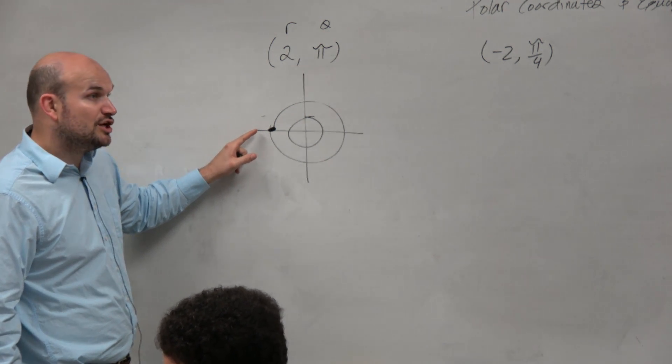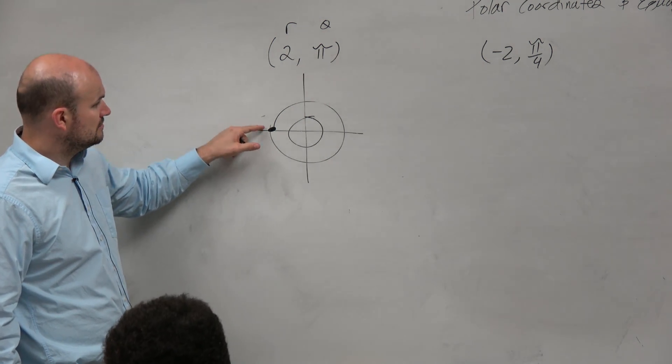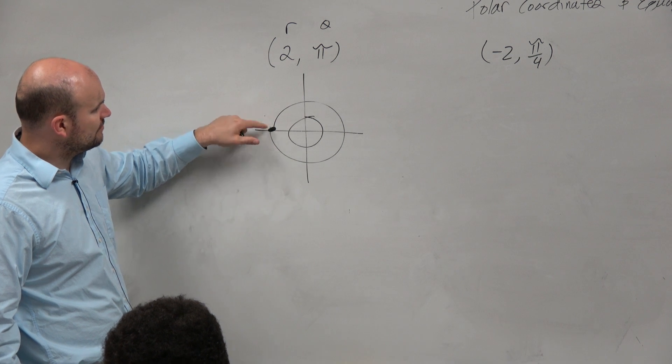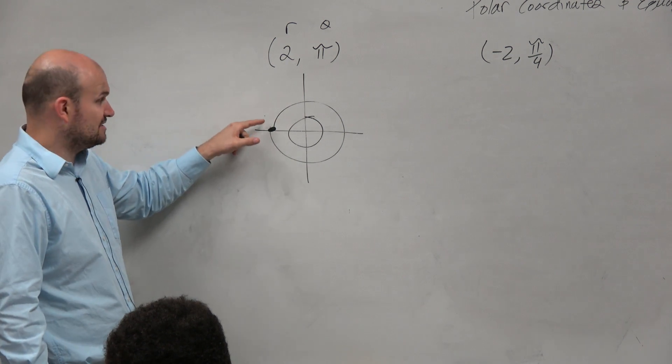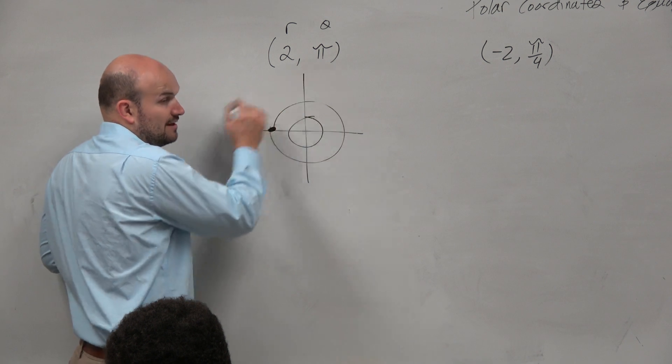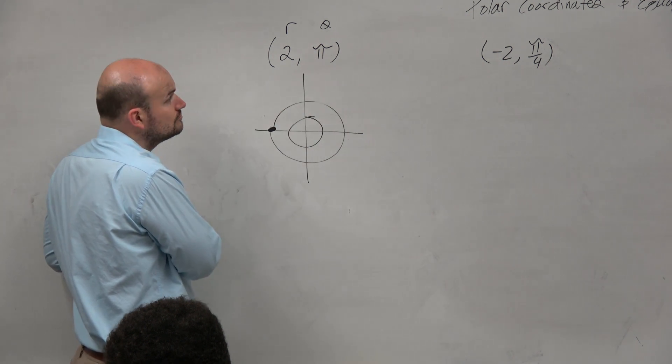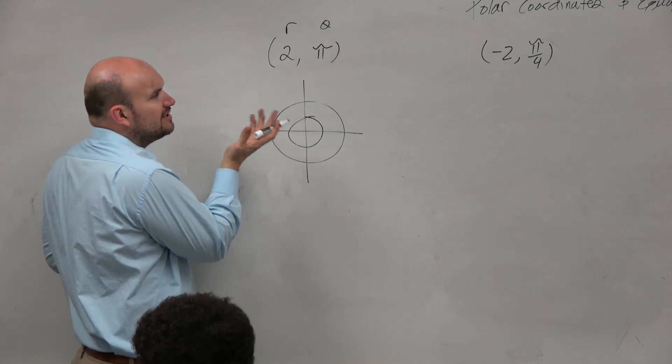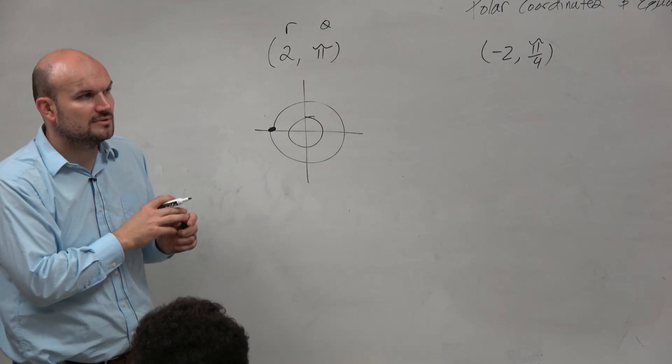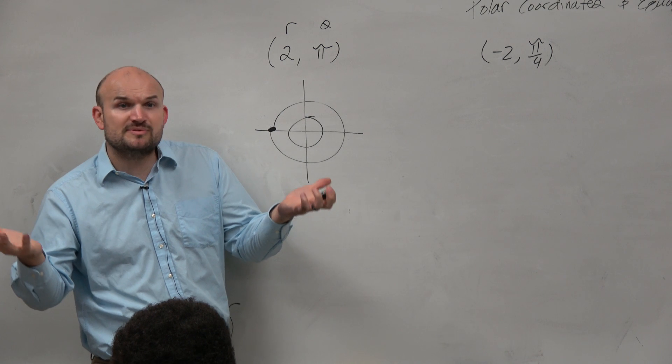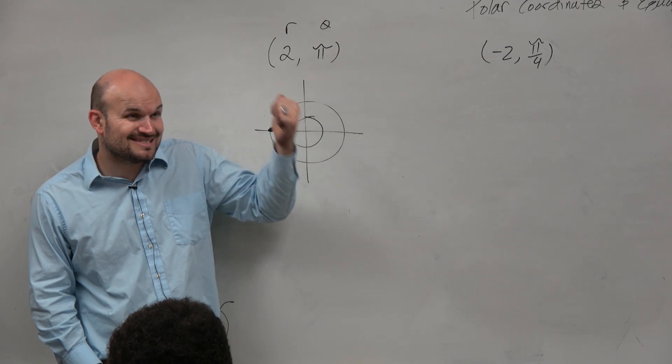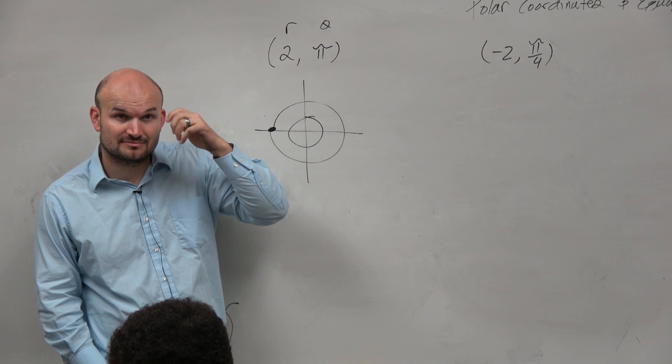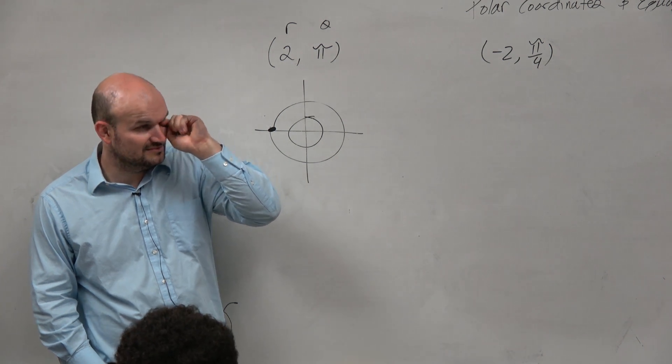Is there another way we could represent that angle? Like what is another angle we could represent pi with? Yeah, we could use 180, but let's just stick with radians for right now. What's another way you could represent 180? How could we get to the same exact point? Negative pi. Yeah.